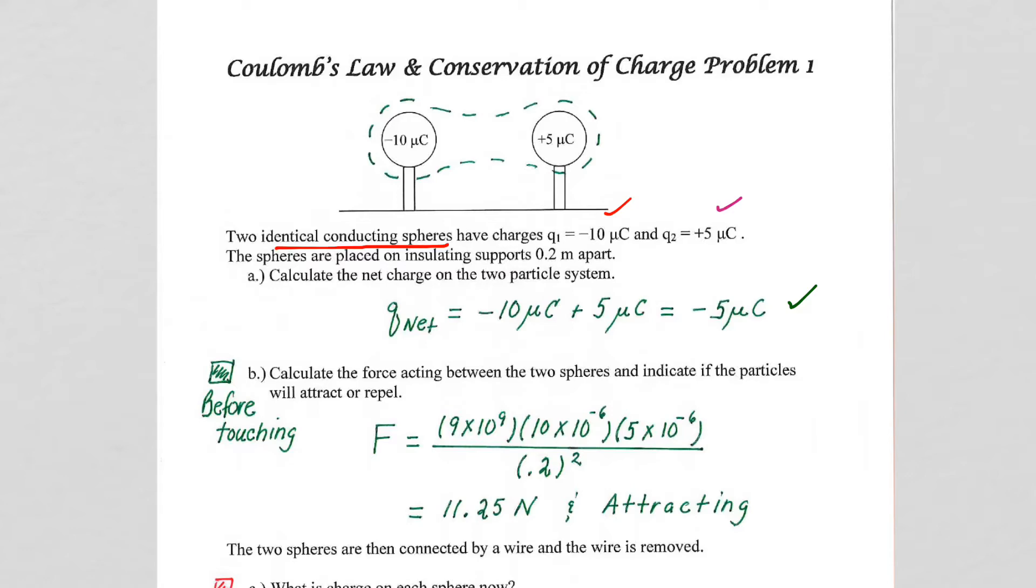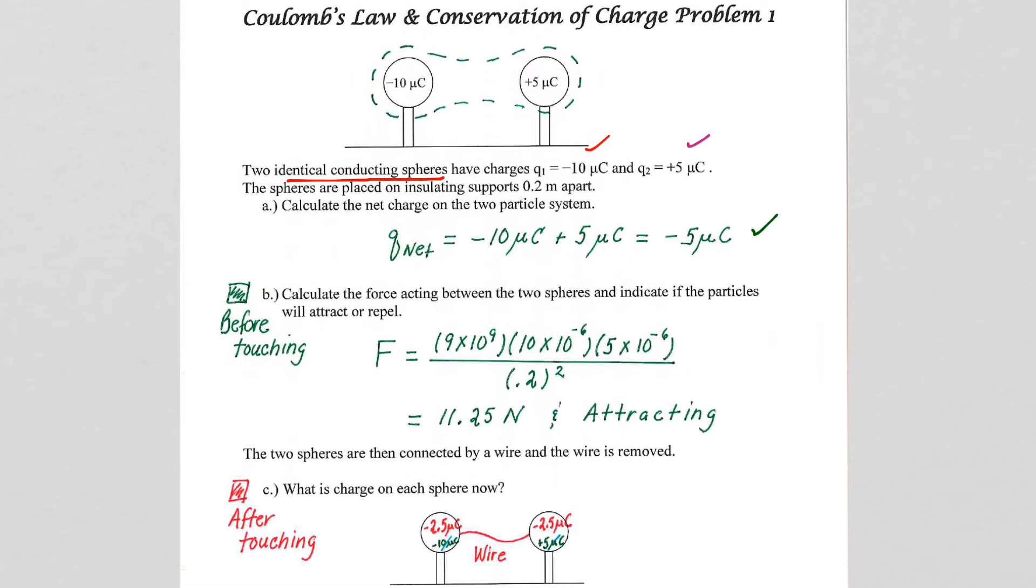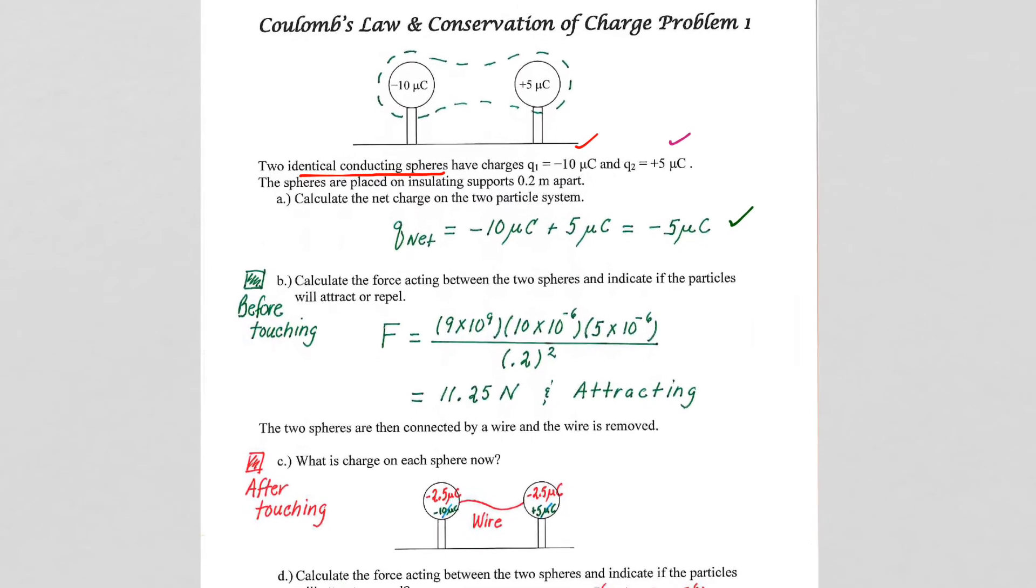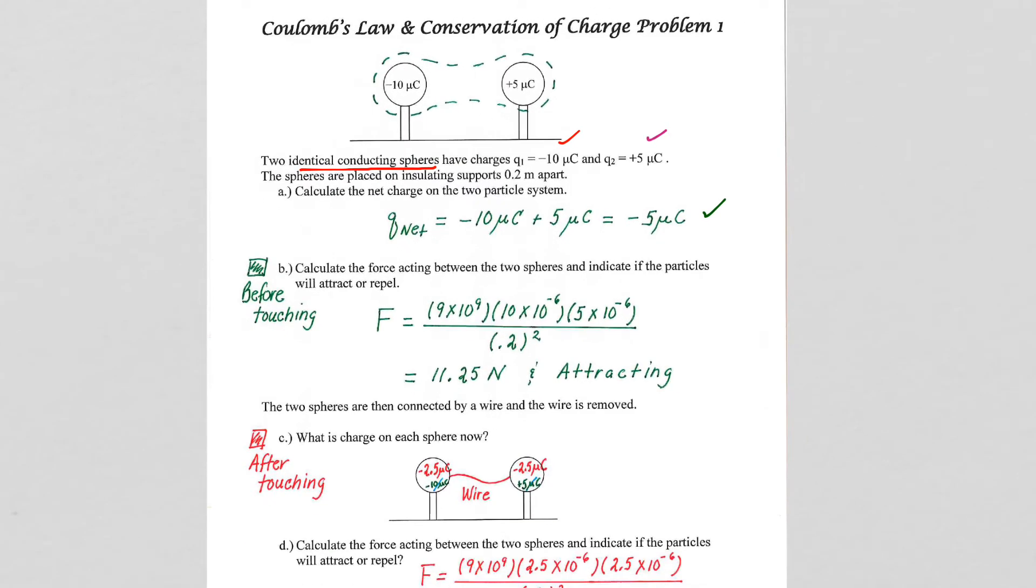In conservation of charge problems, you'll always be looking at befores and afters. Prior to the spheres touching, we are told they are 0.2 meters apart, so Coulomb's Law: K, Q1, Q2, divided by R squared. Notice we're just calculating the value, the magnitude.